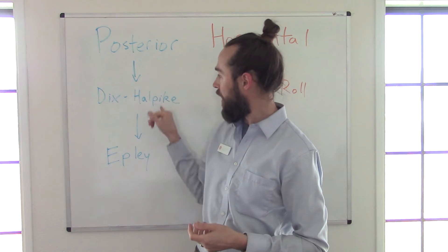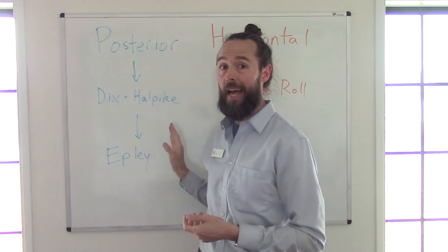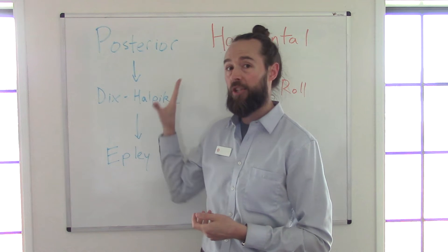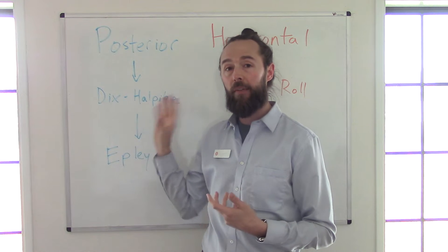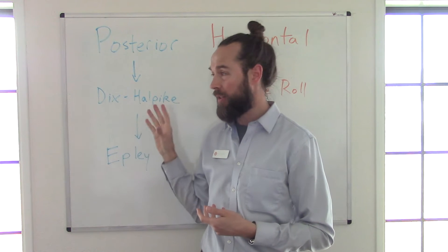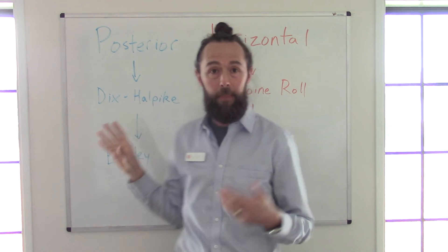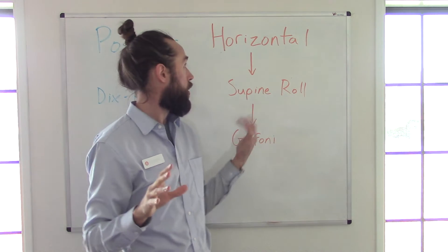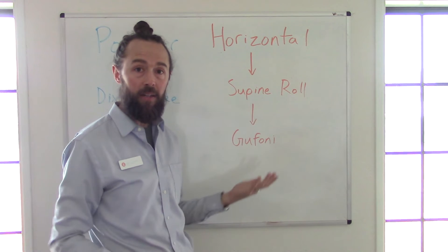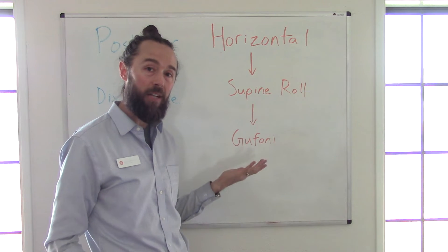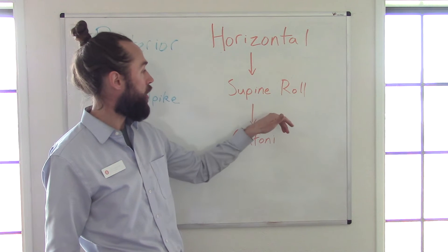That's the rundown for posterior canal testing — it's your most common type. Now if you've got vertigo and it doesn't seem to be posterior canal, maybe it's horizontal canal, which is quite a bit less common.